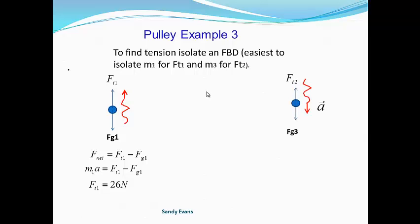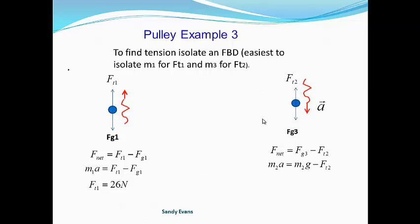Now we'll look at mass 3 to solve for the other tension. Notice our acceleration arrow is down, because that is the way it was when we defined clockwise as positive. So our F-net statement will be positive Fg3 minus our force of tension 2. We simply solve for our tension. That's how we analyze a three-mass pulley system.